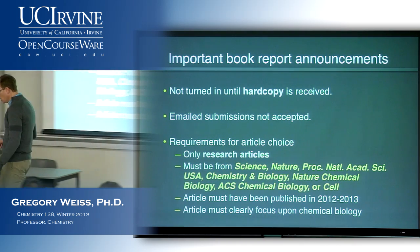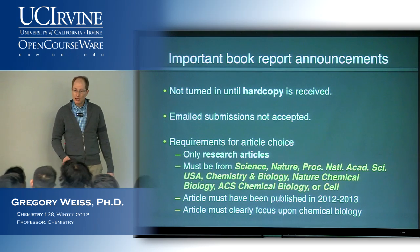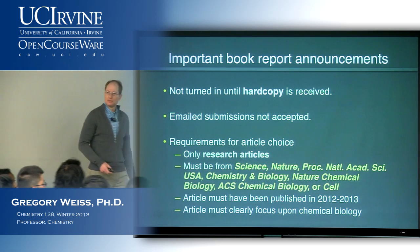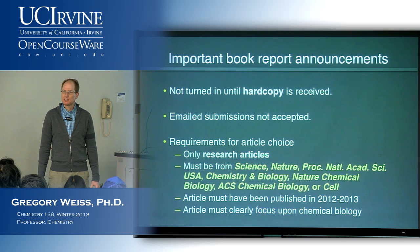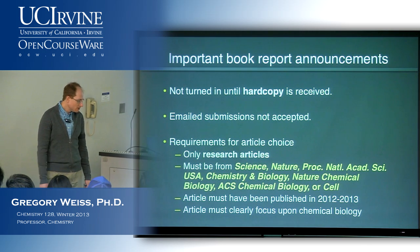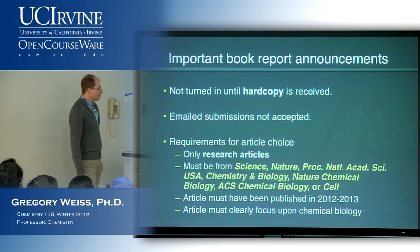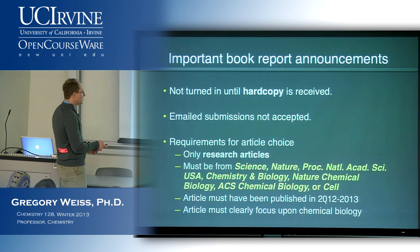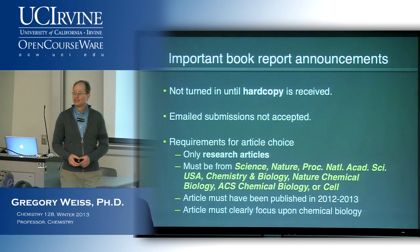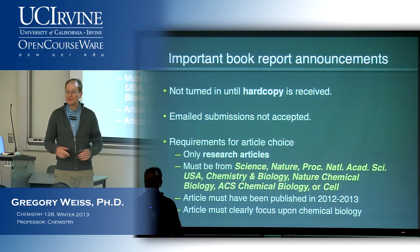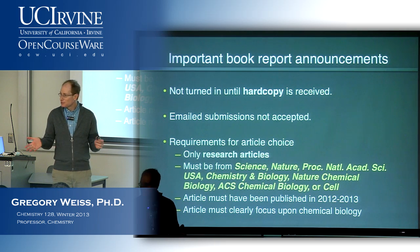A student raised a question for the whole class: they tried to enroll in Turnitin.com and it didn't work. Checking with the class, it seems everyone had trouble and no one was able to do it successfully. The instructor noted this and asked for a note to be made to look into it. The article must also have been published in the last year — it needs the number 2012 or 2013 on it — and it must clearly focus upon chemical biology as defined for this class.